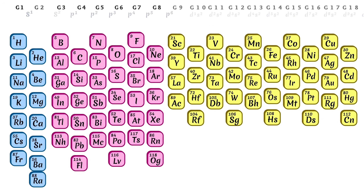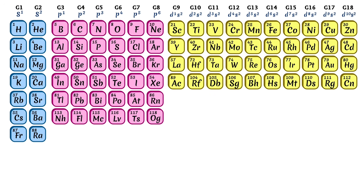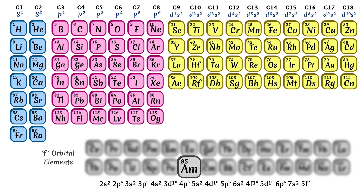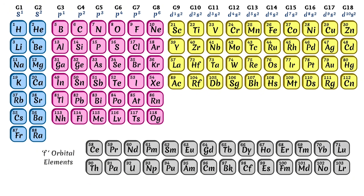Now we have created individual groups by increasing the number of valence electrons in the s, p, and d orbitals. The remaining elements are those in the f orbital. We can arrange these in a separate group. Since all f orbital elements are grouped together in a single section of the periodic table, it will not affect our overall understanding. So let's continue with the s, p, and d orbital elements.